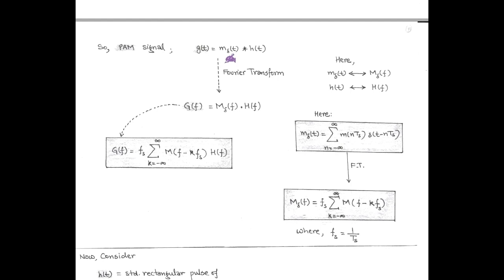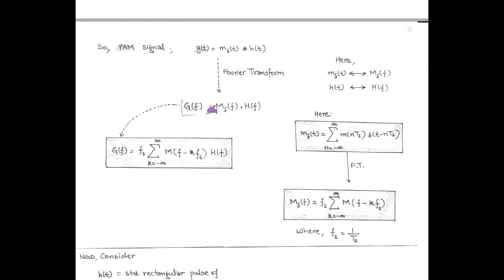In time domain, PAM signal is denoted by G(t) and it equals the convolution of m_delta(t) and h(t). We know that the Fourier transform of the convolution of two signals is simply the multiplication of their individual Fourier transforms. Here, PAM signal G(t) is in time domain and its frequency domain version is denoted by capital G(f). So G(f) is simply the multiplication of the Fourier transform of m_delta(t) and the Fourier transform of h(t), denoted by capital letters.